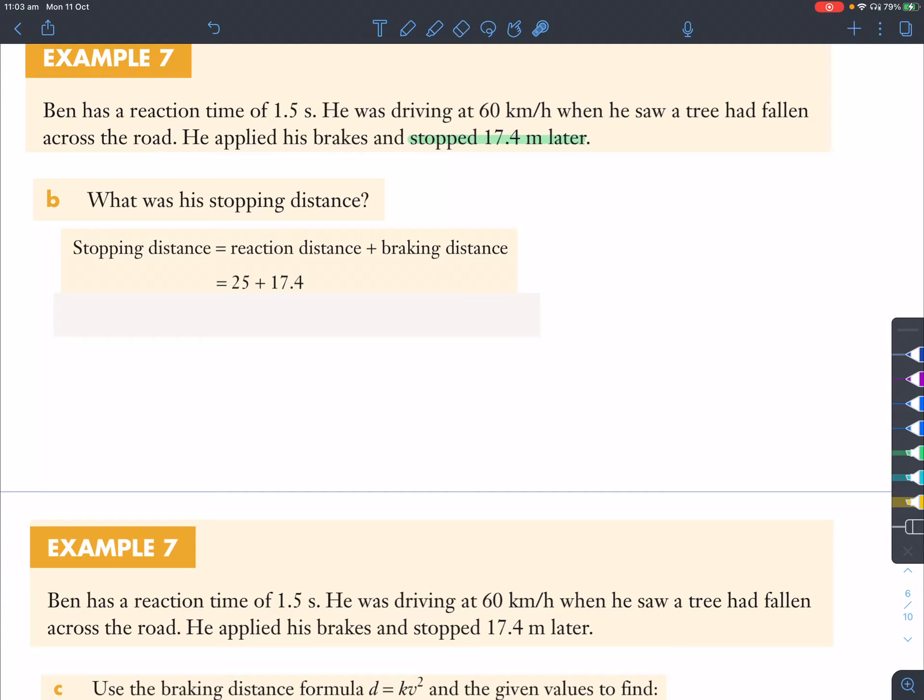So, the total stopping distance will be that reaction distance that we found earlier, that 25 meters, plus by 17.4 meters amount of distance to stop. So, adding those two numbers together will give you 42.4 meters. So, that's quite a lot of distance, given that he's traveled 60 kilometers per hour.